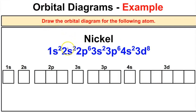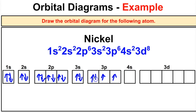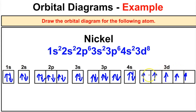Last but not least is nickel. The electron configuration: two electrons in the 1s, two in the 2s, six in the 2p, two in the 3s, six in the 3p, two in the 4s, and eight electrons in the 3d orbitals. Paying attention to Hund's Rule, we fill each of the five 3d orbitals with one electron first, all spinning in the same direction, before going back and adding a second electron. Nickel ends up with two unpaired electrons.